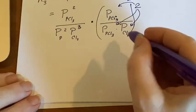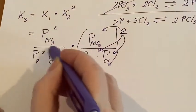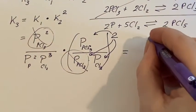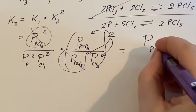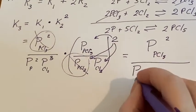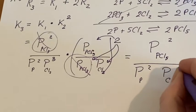When you get done doing that, cancel out. This one will now be squared, which will cancel with that. Gone. And you'll end up with the pressure of the pentachloride squared over the pressure of the phosphorus squared and the pressure of the chlorine gas.